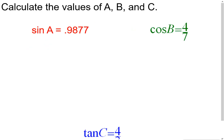Now the first thing we have is just looking at some little equations involving sine, cosine, and tangent, where we figure out what angles A, B, and C are. Similar to solving an equation, we have to get the variable all by itself. In this first one, we have the sine of A — a lot of people think there's a times sign, but it's saying the sine of some angle A equals 0.9877.